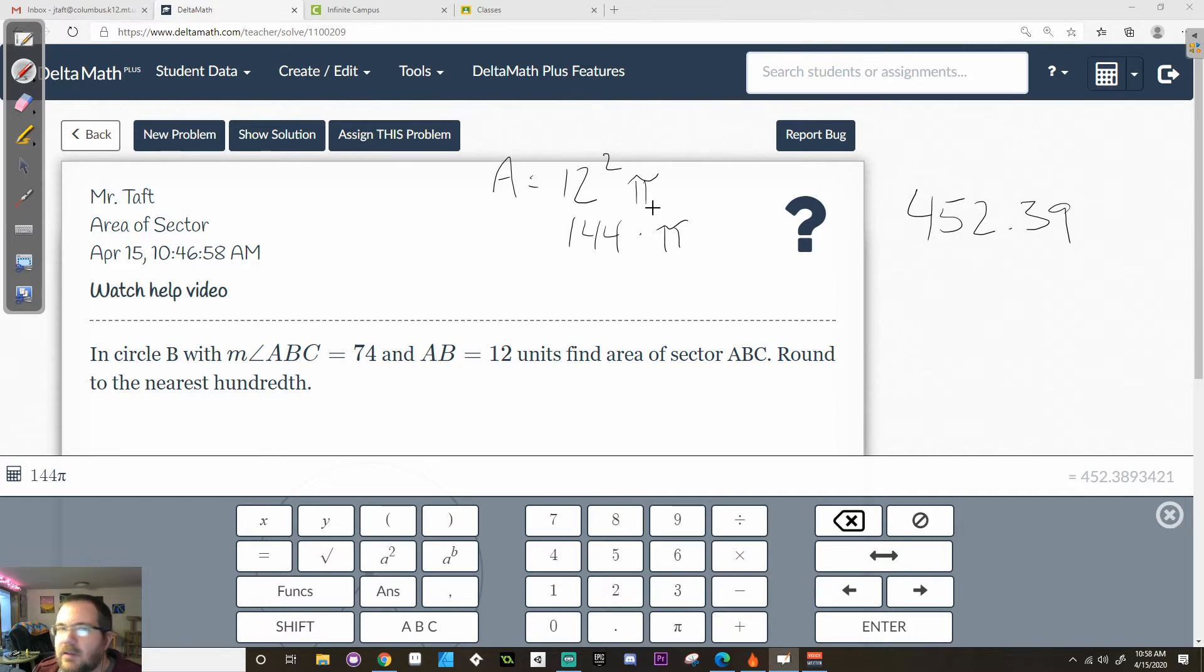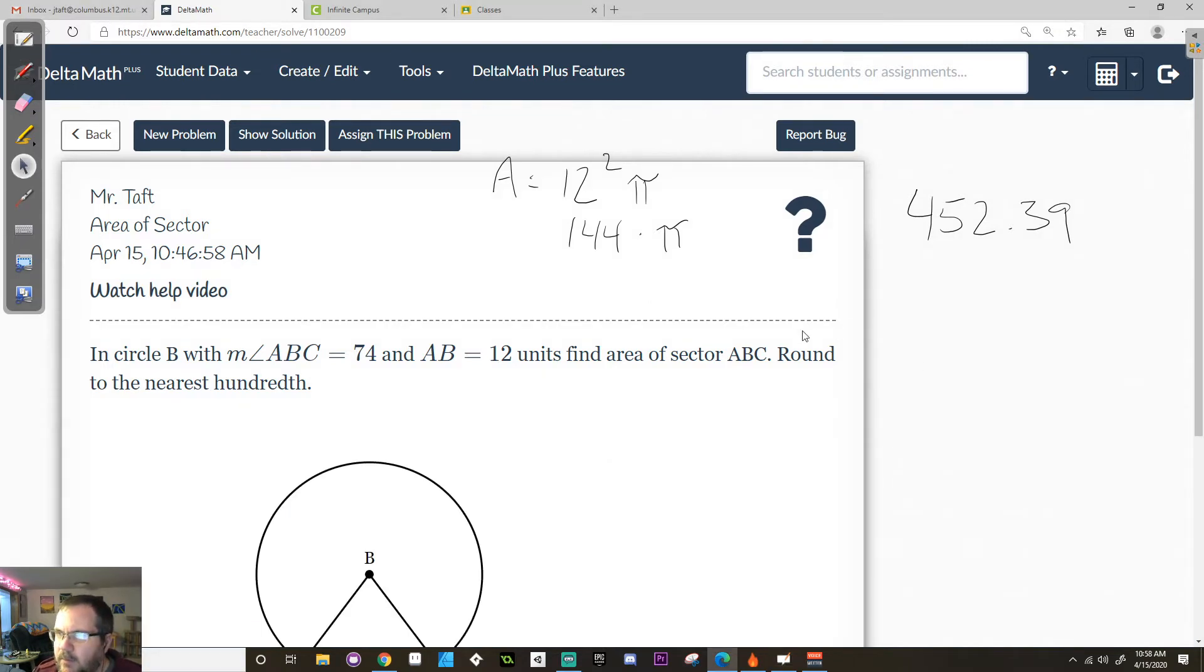Here we go. Now I can continue with the rest of the problem. So that's the area. I want to find out what the sector area is. So sector area over 452.39, that's going to be equal to angle which is 74 over 360 for the total angles.